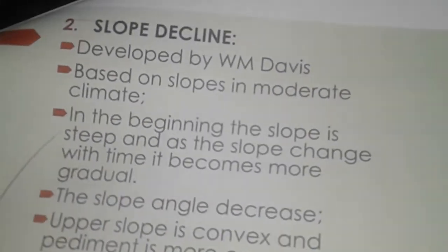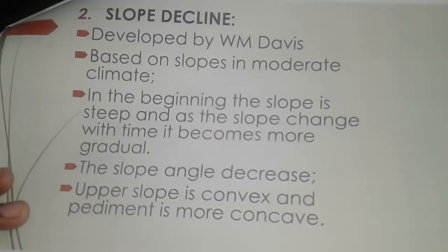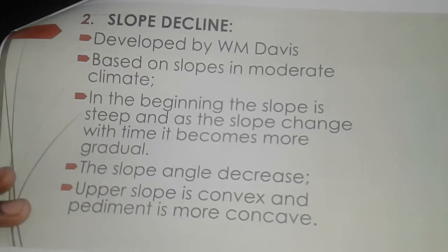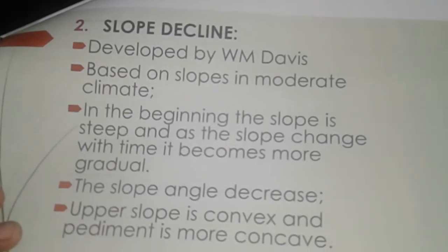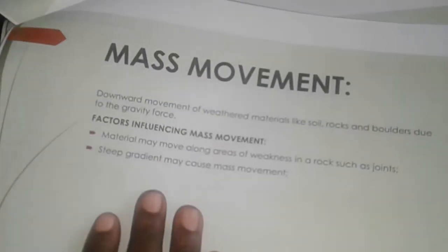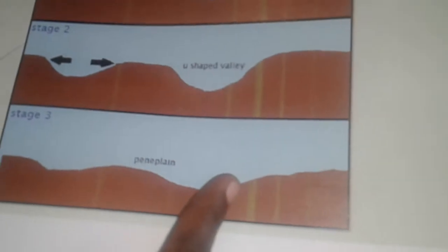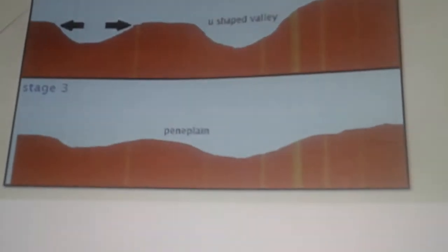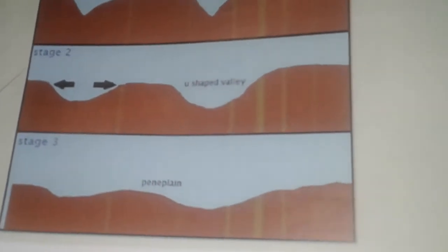WM Davis's theory of slope decline looked at slopes within humid areas. He says slopes are always steep in the beginning, but the slope angle decreases over time with erosion — hence the term slope decline. Steep slopes gradually become gentler slopes as erosion increases in that particular area.